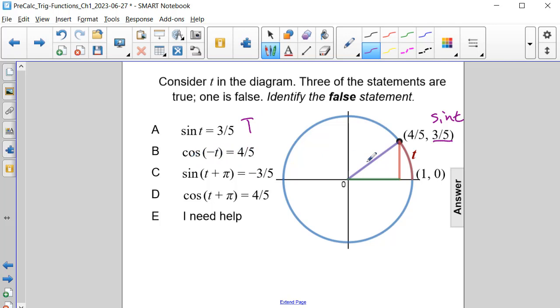The cosine of negative t - if I was to redraw my triangle this way, this would be negative t at this angle.